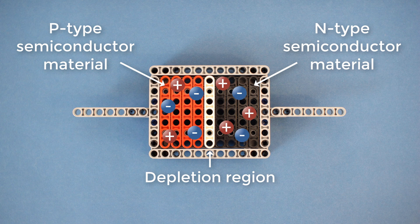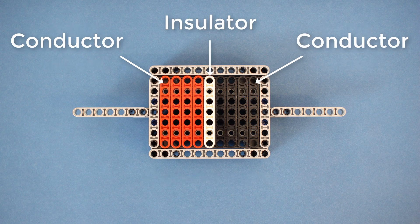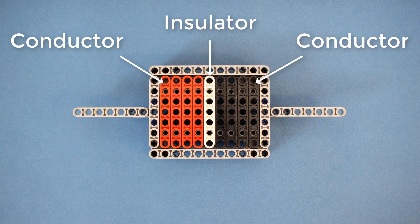It's difficult for electricity to move through this depletion region, so it acts as a sort of insulator. Two conducting materials separated by an insulator can act as a capacitor, a device capable of storing electrical energy.